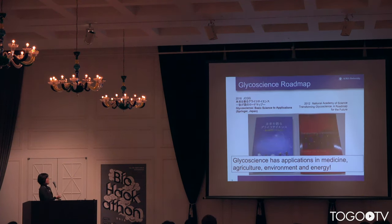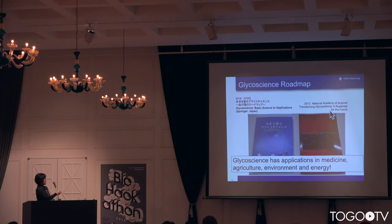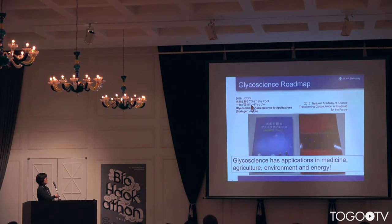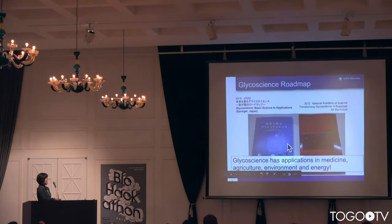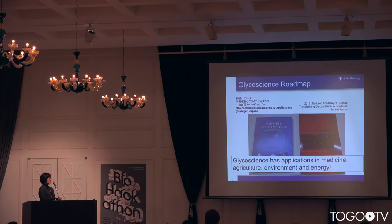In 2012, the National Academy of Sciences in the U.S. published this roadmap, Transforming Glycoscience. And this year, the Japanese Society for Carbohydrate Research has also published a roadmap, which will be published soon under Springer. This roadmap emphasizes that glycoscience is not only involved in medicine, but also has applications in agriculture, environment, and energy.